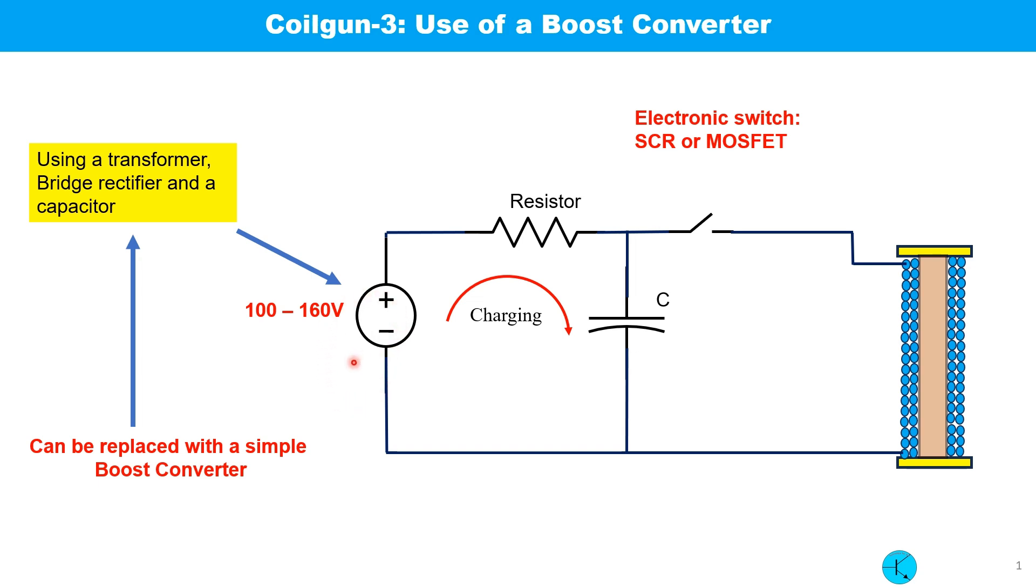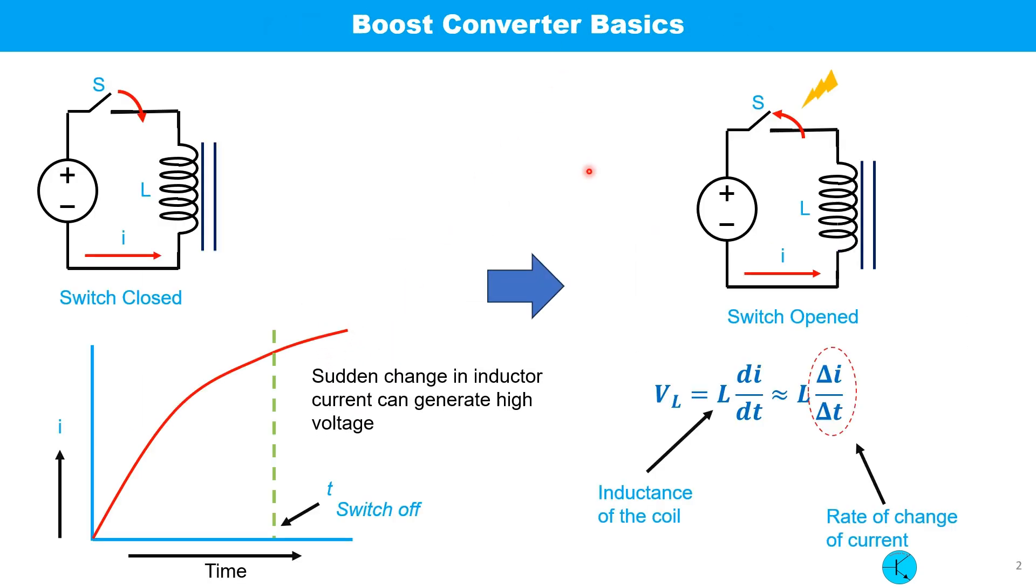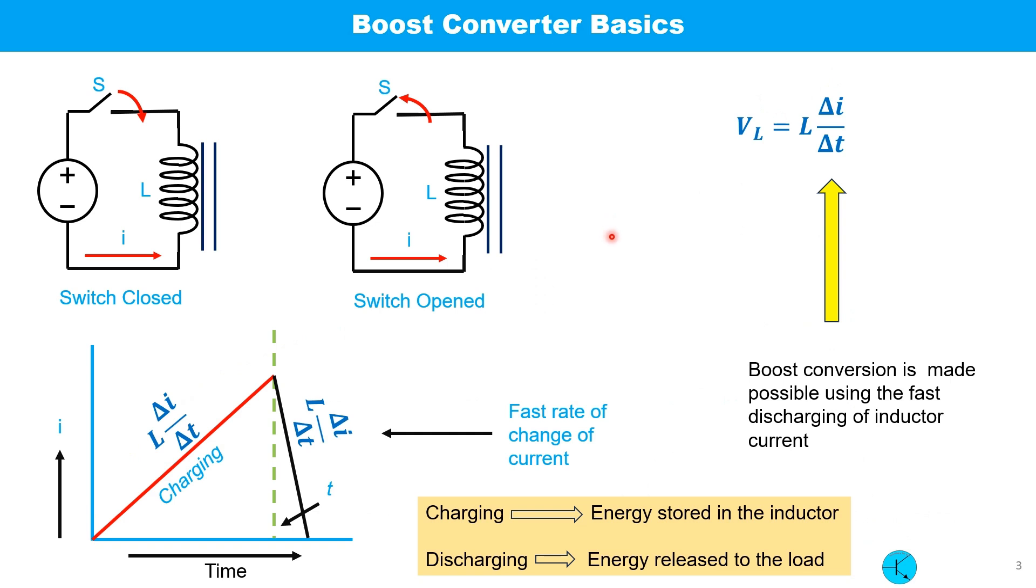The heart of a boost converter is an inductor. When an inductor is powered, current starts to increase from zero to higher and higher current. If suddenly the switch is opened, the sudden change in current, or we can say dI/dt, becomes very high. As a result we can get higher voltage across this inductor. This is the basic principle of generating high voltage.